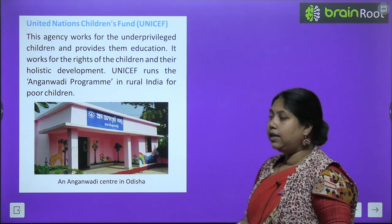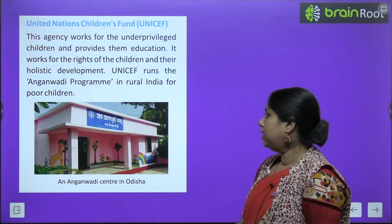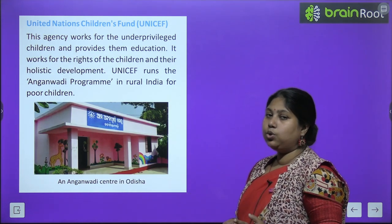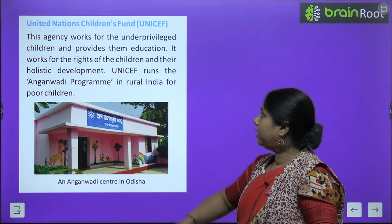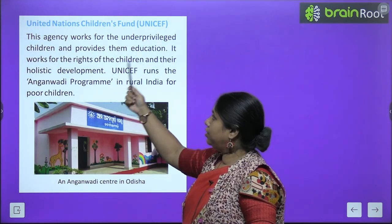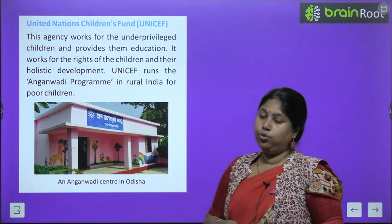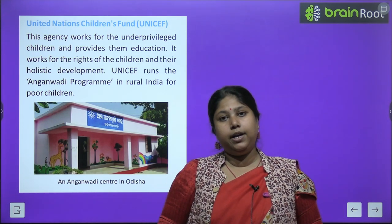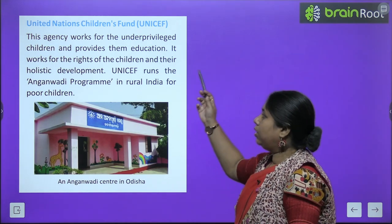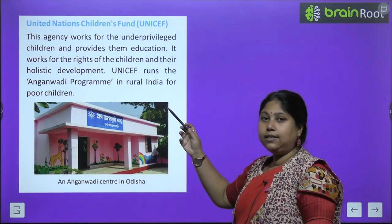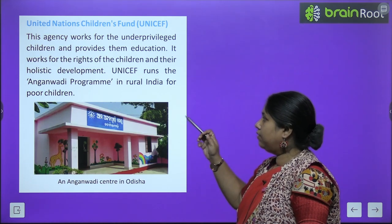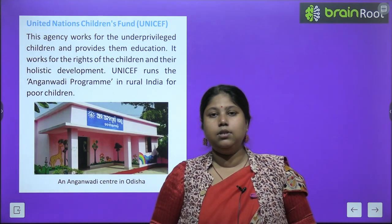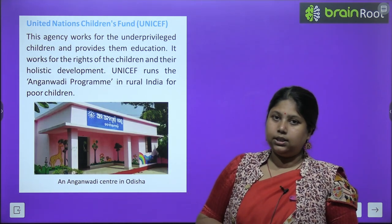UNICEF — ye children ke liye kaam karta hai. UNICEF ka complete focus bacho ke welfare aur education ke liye jata hai. It works for the underprivileged children and provides them education — jo bahut gareeb bachche hote hain ya jinke parents bacho ko school bhejne mein effort nahi kar sakte, wahan bachche padhne jaate hain. It works for the rights of children and their holistic development. UNICEF runs the Anganwadi program in rural India for poor children.